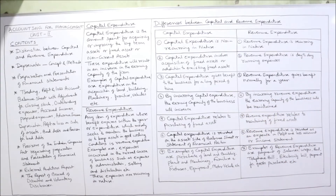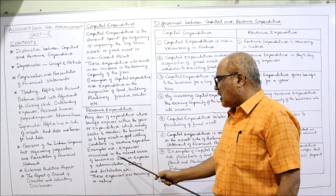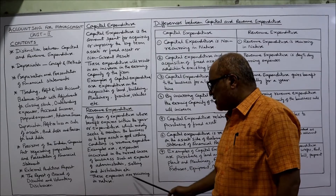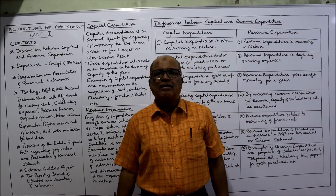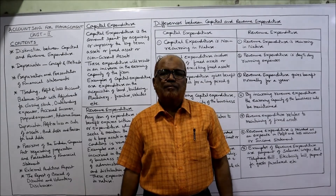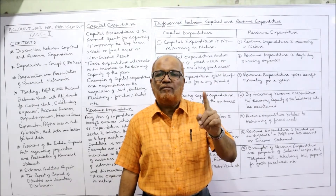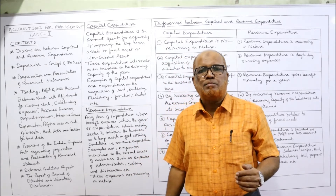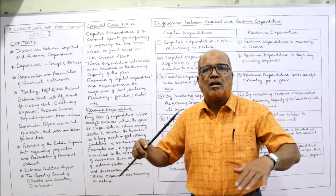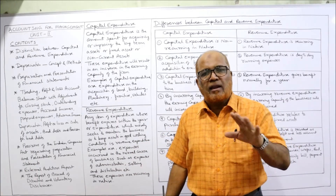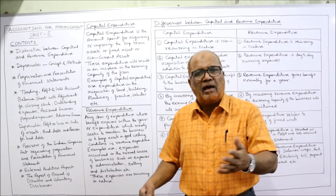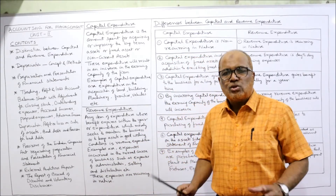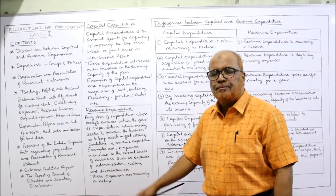Examples of revenue expenditure include any expenditure incurred in the normal course of business, such as administration, selling, and distribution expenses. These are recurring in nature — meaning repetitive. Expenses like salary, rent, electricity bill, and telephone bill are paid every month. Because they recur continuously, they are called revenue expenditure.